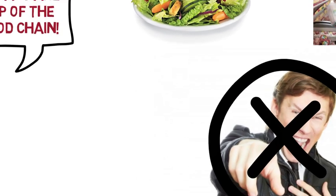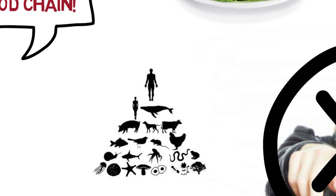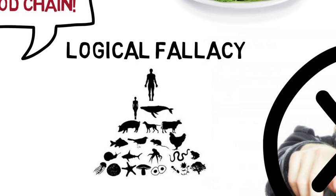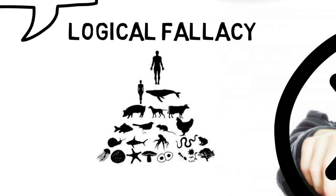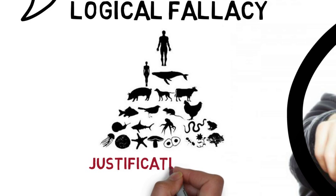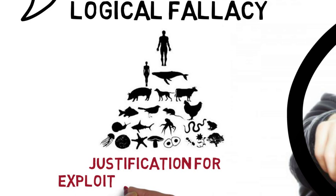Top of the food chain is one of the most commonly used logical fallacies people use when justifying their choice of animal cruelty and exploitation.